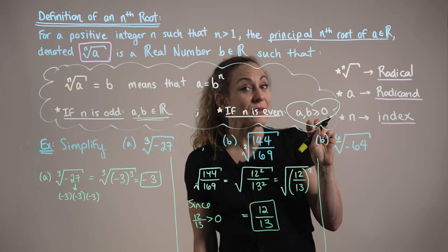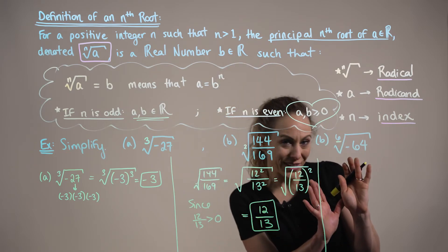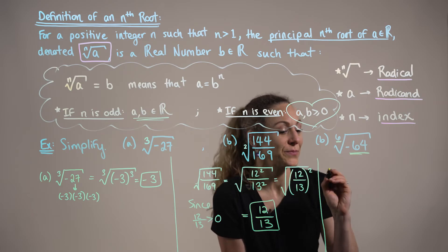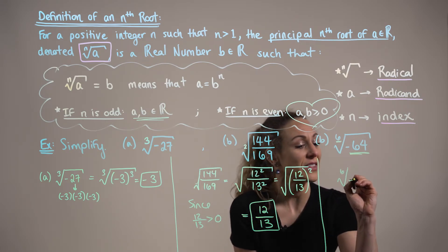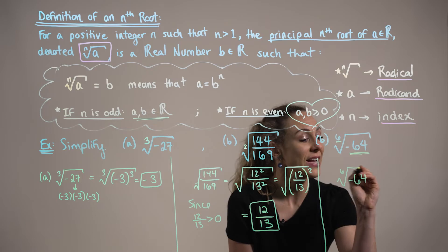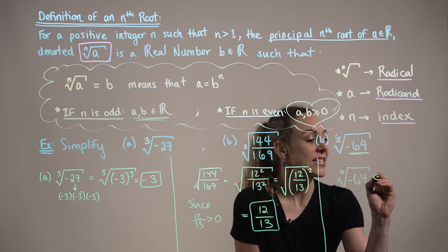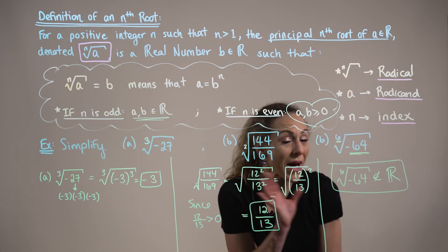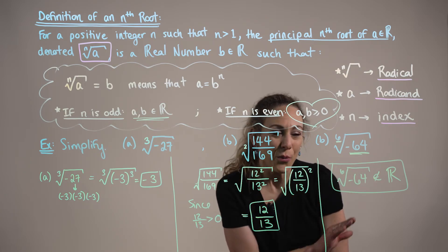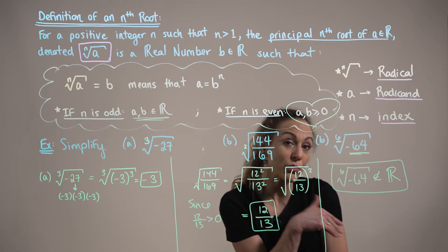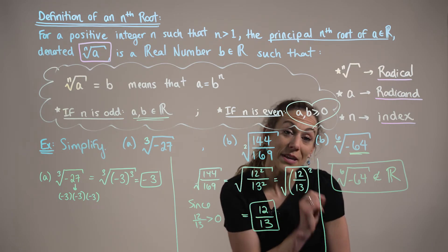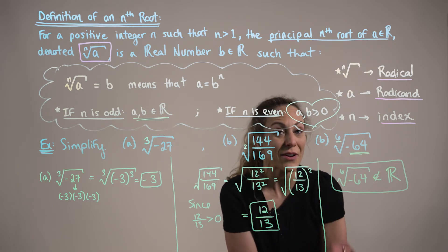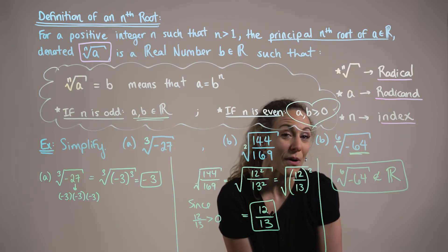But when we look at the radicand, we realize that, wait a second, this is a negative number. So, we can actually conclude here immediately that the sixth root of minus 64 is not real. And we know that this is not real, since no matter how hard we try, we can't find a number that when raised to the sixth power is going to be equal to negative 64. Because when we multiply numbers together an even number of times, we always produce positive values.